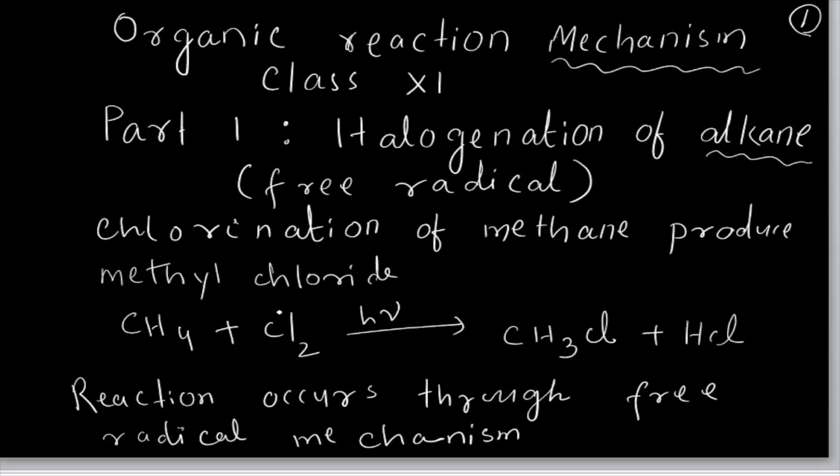Halogenation of alkane by the free radical method. What is meant by halogenation of alkane? You know what an alkane is — CnH2n+2. If an alkane is there, then halogenation means chlorine, bromine, or iodine is added. This method always proceeds by the free radical mechanism.